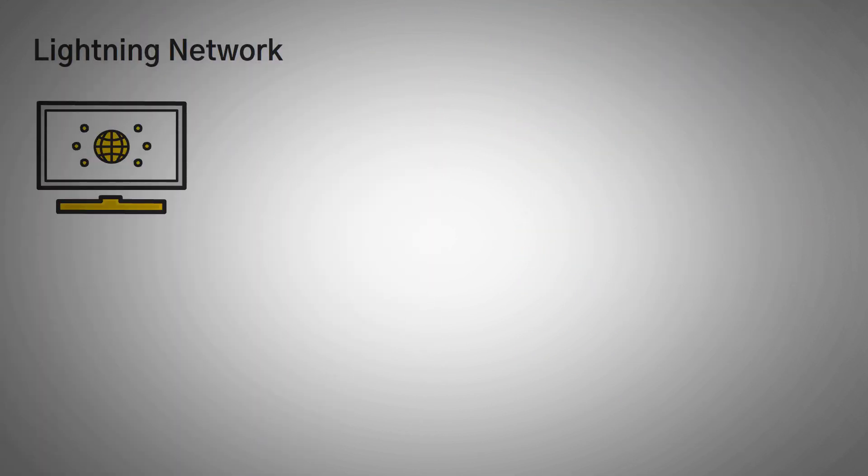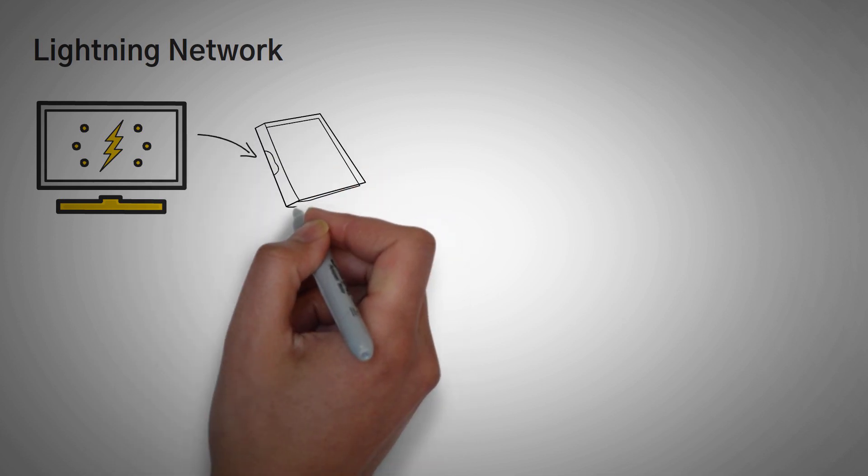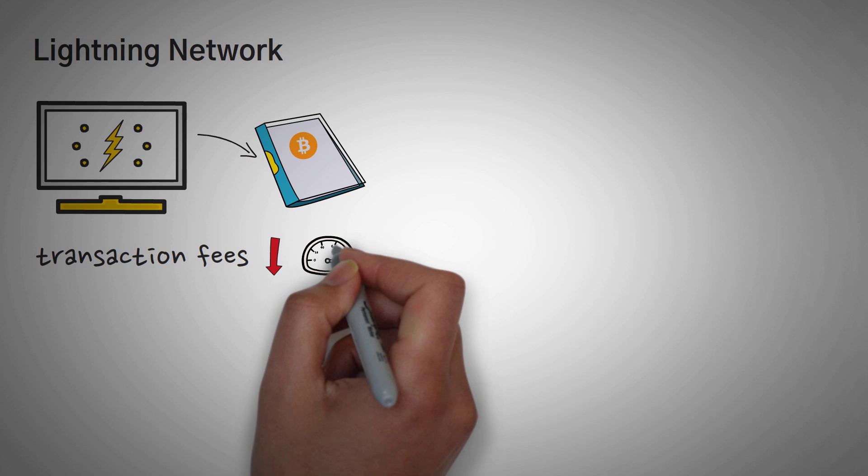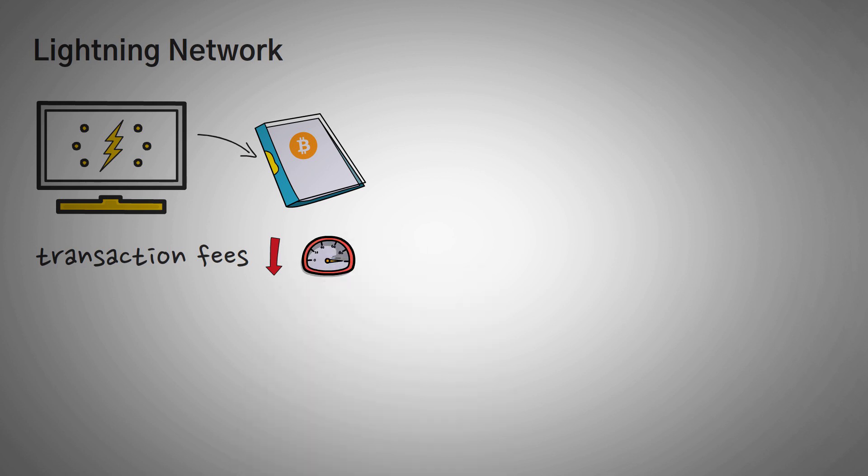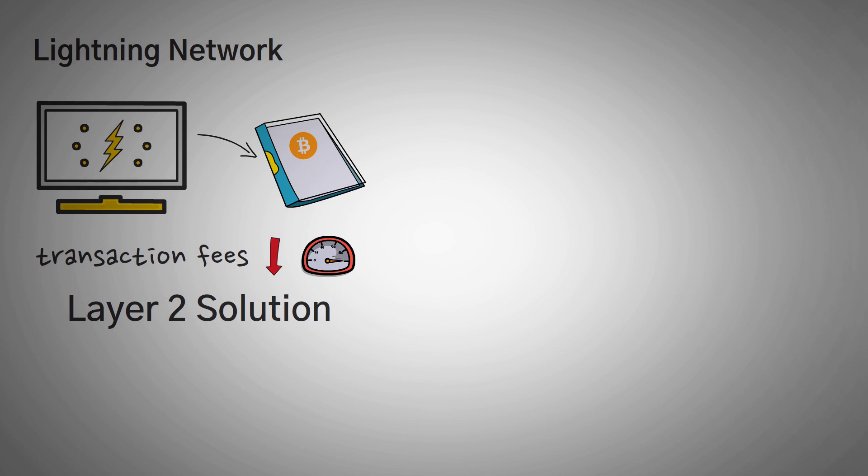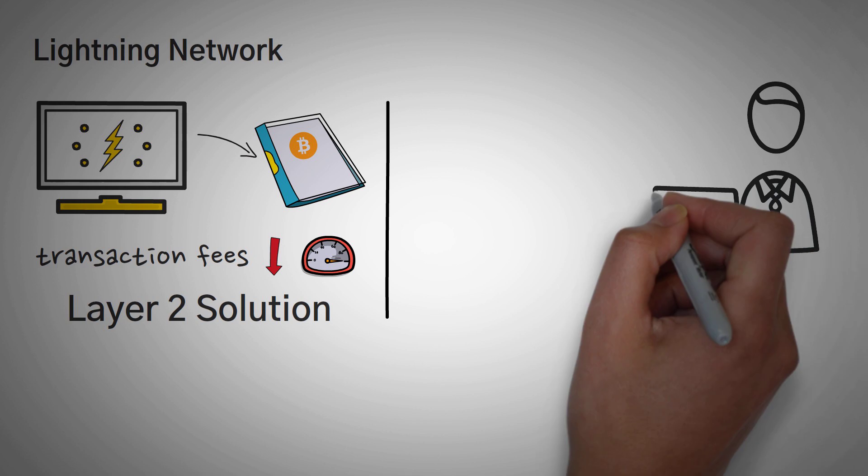So what is the Lightning Network? In short, the Lightning Network is an off-chain ledger for Bitcoin to keep transaction fees low and faster than the actual Bitcoin blockchain. It is technically considered a Layer 2 solution to help scale Bitcoin. So before we dive too deep into this, you need to know some basics about Bitcoin.